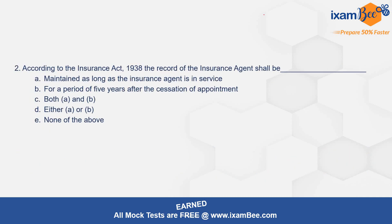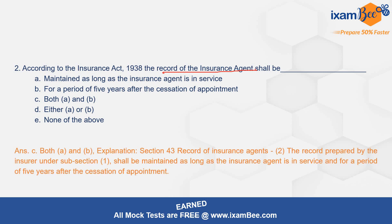Moving on to question number 2: according to the Insurance Act, for how long shall the record of the insurance agent be maintained? The correct option is C, which is both A and B — maintained as long as the insurance agent is in service and for a period of 5 years after cessation of appointment. Section 43 is the related provision on records of insurance agents, which states the record prepared by the insurer shall be maintained as long as the agent is in service and for 5 years after the cessation of his appointment.